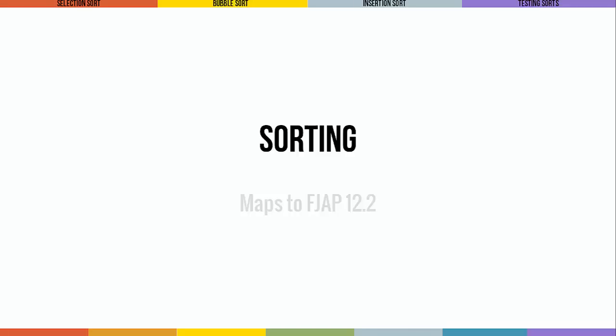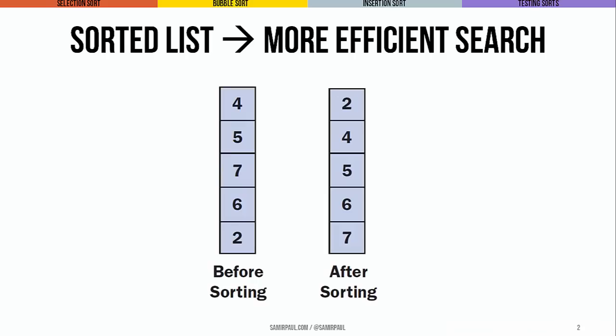We saw in the last lecture that if the elements in an array are sorted in ascending order, it opens up a whole new world of more efficient methods for searching that array for some target value. But when the elements are in random order, that means we have to rearrange them before we can take advantage of any ordering, and that's what we mean when we say we want to sort the array.